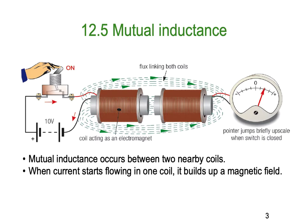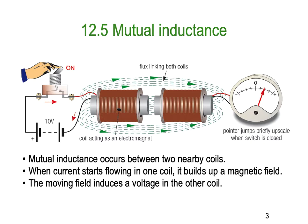When current starts flowing in one coil it builds up a magnetic field, and as the magnetic field builds up it induces a voltage in the nearby coil. The moving field induces the voltage in that other coil because of their proximity and the relative movement between the field and the turns of that second inductor.